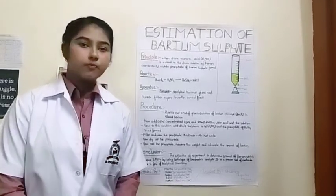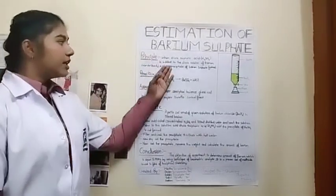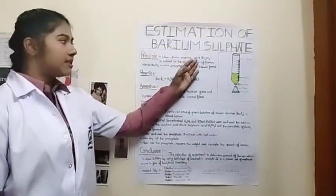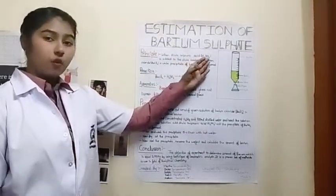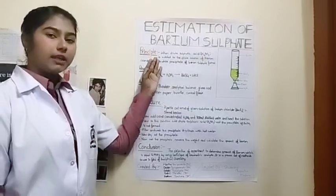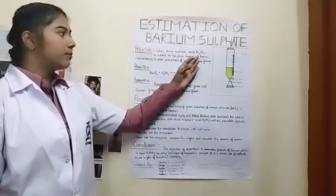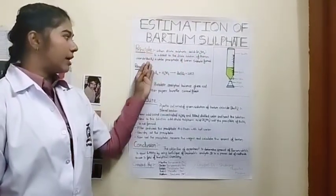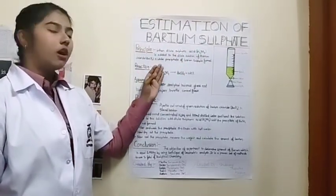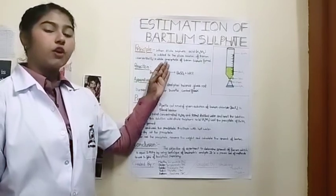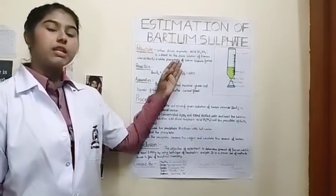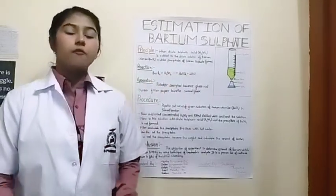Let's start with the principle. When a dilute sulphuric acid, H2SO4, is added in the solution of dilute barium chloride, BaCl2, a white precipitate of barium sulphate is formed.